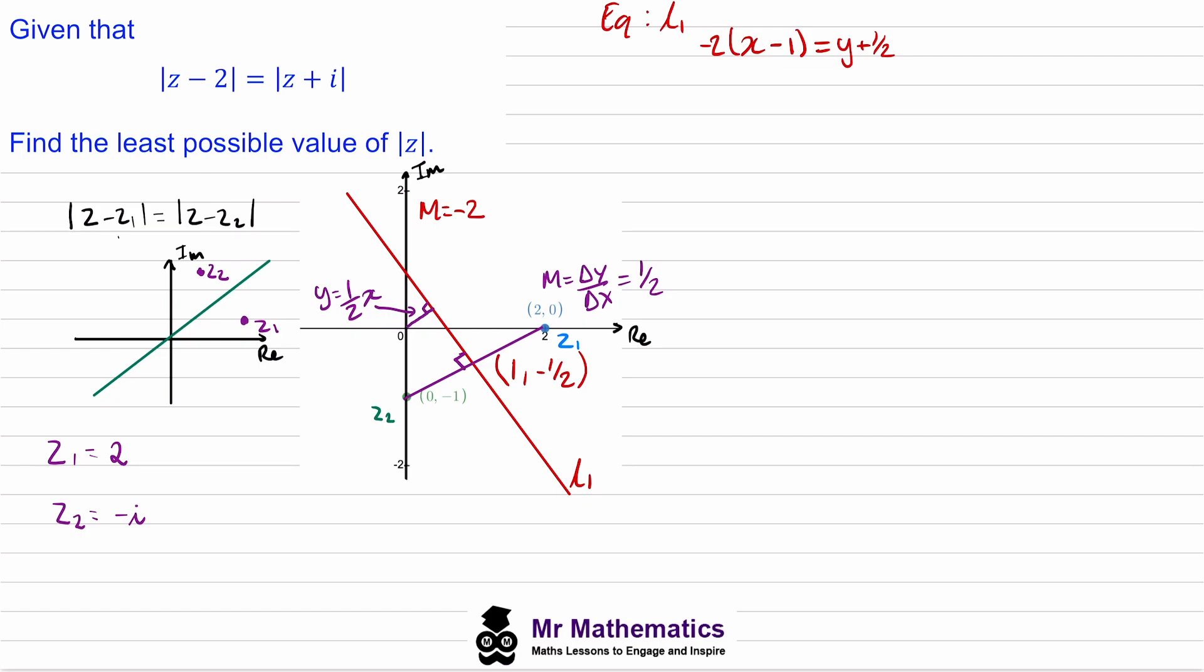We can tidy this up by expanding the brackets, so negative 2x plus 2 minus this 1/2 will equal y. So the equation of the red line, y will be negative 2x plus 3/2.